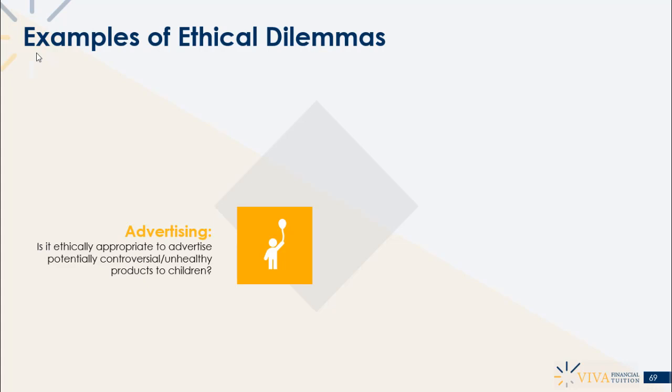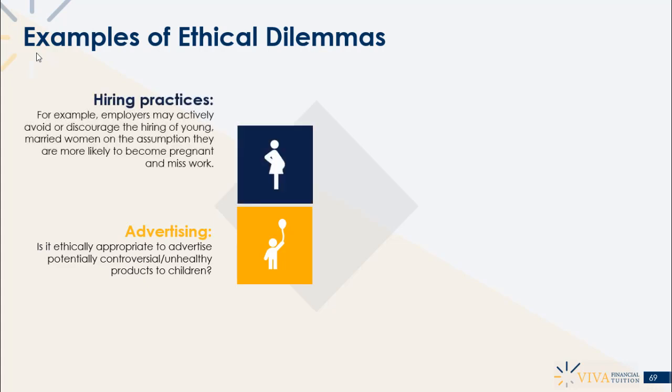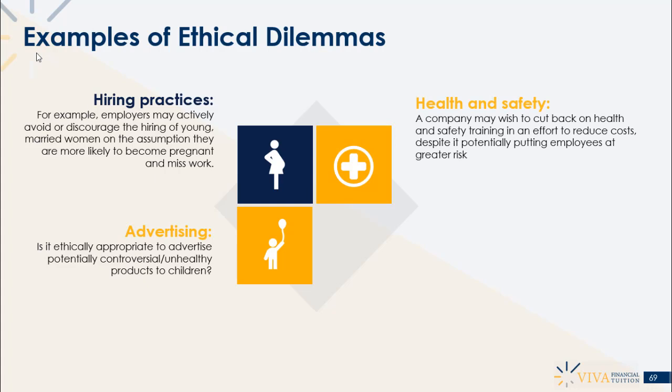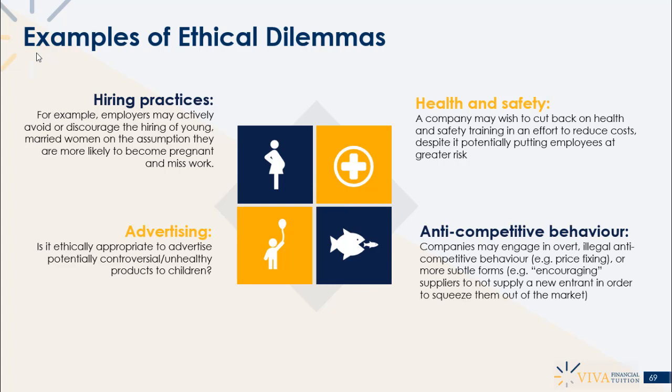Advertising: is it ethically appropriate to advertise potentially controversial or unhealthy products to children? Hiring practices: employers may actively avoid hiring young married women on the assumption they are more likely to become pregnant and miss work. Health and safety: a company may wish to cut back on health and safety training to reduce costs despite potentially putting employees at greater risk. Anti-competitive behavior: this includes overt illegal practices like price fixing, but also more subtle forms — such as encouraging suppliers not to supply a new market entrant in order to squeeze them out.